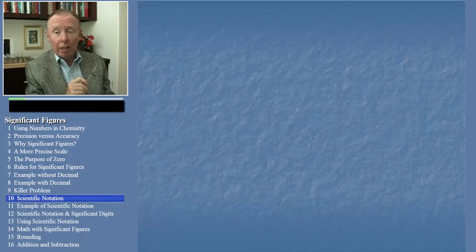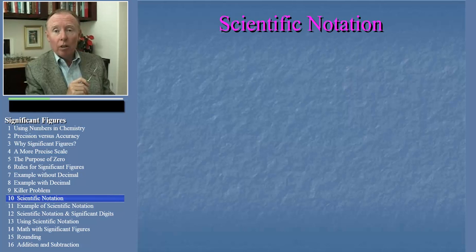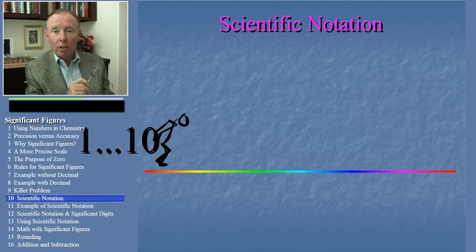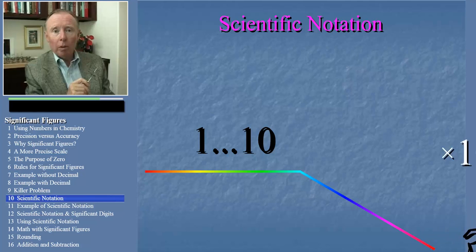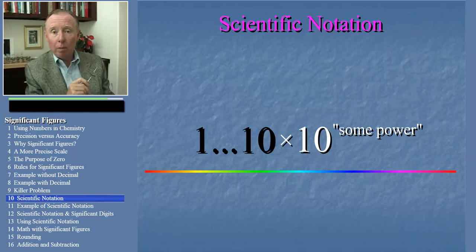Sometimes ambiguities can arise with significant digits. Writing numbers in what is called scientific notation resolves these ambiguities. You may have used scientific notation before. In scientific notation, we write a value as a number between one and ten and then we multiply that number by ten to some power. Let's look at some examples.